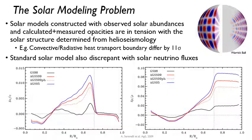You plug all of this in and get things like the central temperature of the sun, the density as a function of radius, temperature as a function of radius, the helium mass fraction at the surface, and so on. You then confront the standard solar model with other observations — for instance, so-called helioseismology.